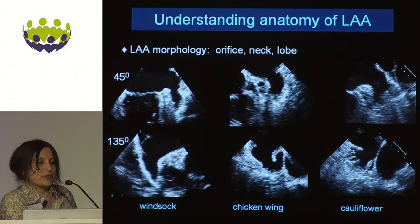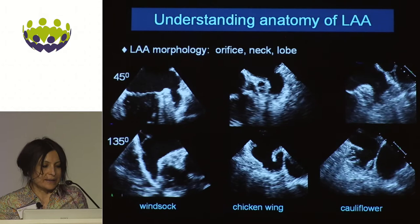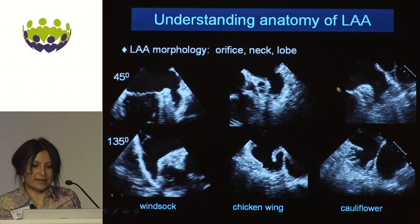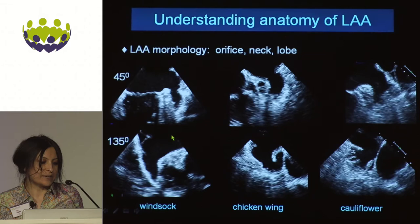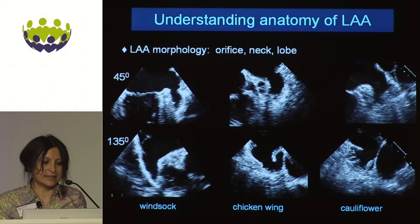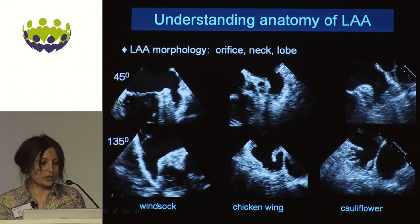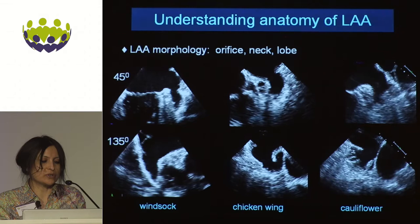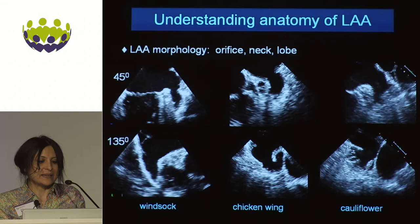The left atrial appendage is actually made up of several parts. At 45 degrees the appendage looks very much windsock-like, but as you rotate through to higher degrees and look more anteriorly in the heart, the LA appendage can assume quite different shapes. You have the windsock, chicken wing, and cauliflower. There's a fourth described called cactus, but on ECHO the cactus has been identified more using CT imaging, so these three types of shape broadly explain the anatomy we might see.